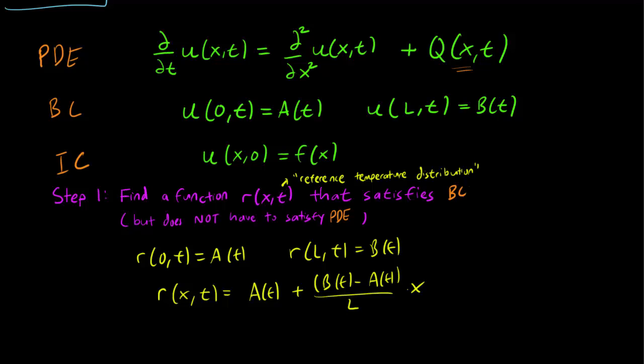So, geometrically, what we are doing is that we are drawing a straight line between A and B. So this is A(t), and this is B(t), and you can imagine this line changes with time, but it doesn't matter. And we are just drawing a straight line between A and B, and then we are calling that our r(x,t).